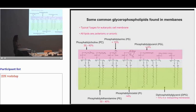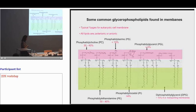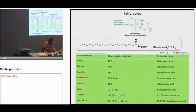Common phospholipids include phosphatidylcholine (the most common), phosphatidylethanolamine (PE), phosphatidylserine (PS), phosphatidylinositol with its sugar group, phosphatidylglycerol, and cardiolipin — a particular lipid whose head group is made with phosphatidylglycerol linked to two phospholipids.